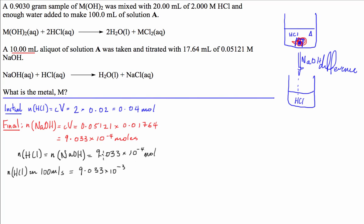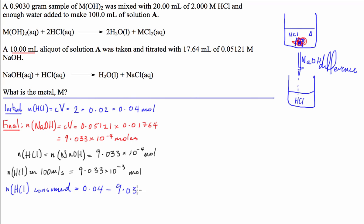So we start with 0.04 moles of hydrochloric acid and end with 9.033 times 10 to the negative 3 moles. The number of moles of hydrochloric acid consumed — that is, how many moles reacted with the 0.903 gram sample of the unknown metal hydroxide — equals 0.04 subtract 9.033 times 10 to the negative 3, which equals 3.0967 times 10 to the negative 2 moles.